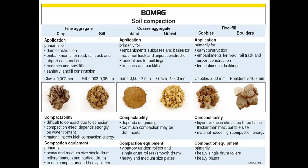Coarse aggregates are used for embankments and sub-bases and bases for roads, rail tracks, and airport construction, as well as foundations for buildings, trenches, and backfills. Sand particle size ranges from 0.06 to 2 mm and gravel size ranges from 2 to 60 mm. Compactivity depends on the grading and too much compaction may be detrimental. Vibratory tandem rollers, single drum rollers, and heavy and medium size plates are used for compaction.